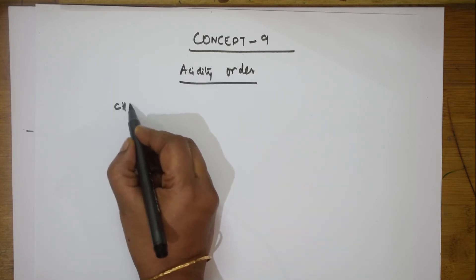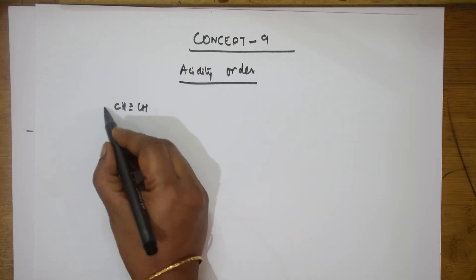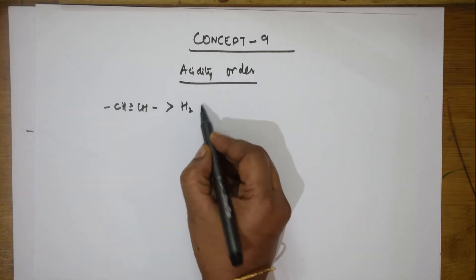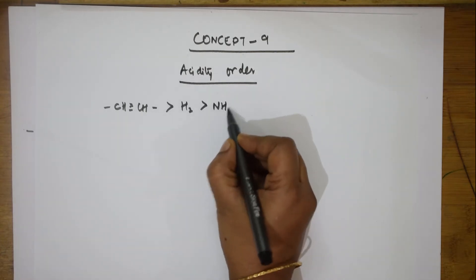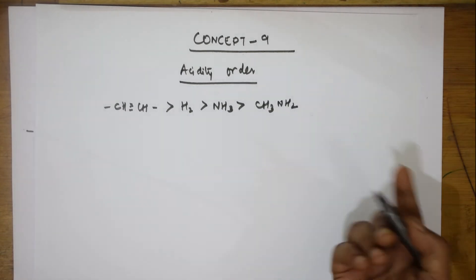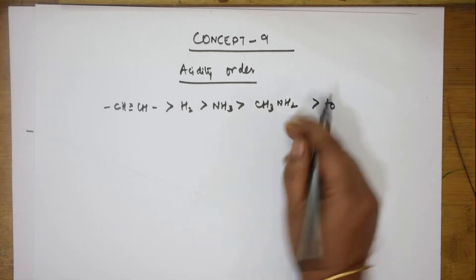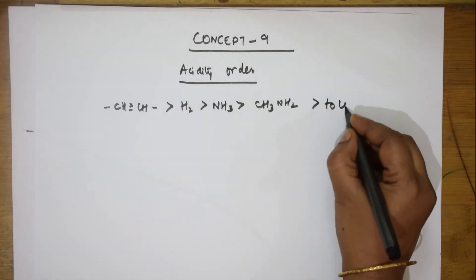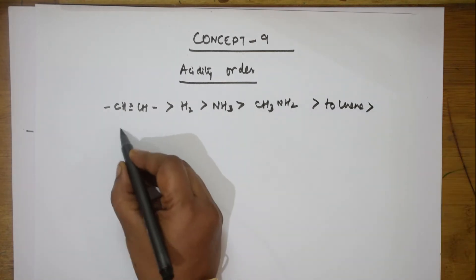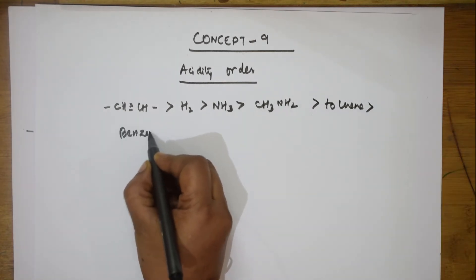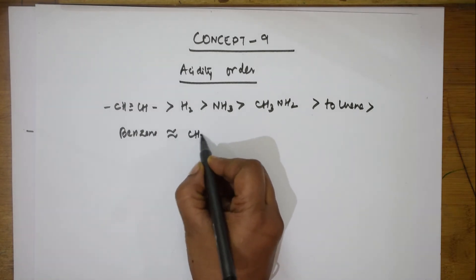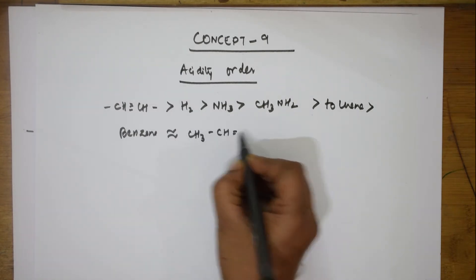The acidity order when you have both hydrocarbons and amines would be: the highest acidity is in alkynes, which is greater than hydrogen, which is greater than ammonia, which is greater than aliphatic amines. This is more acidic than toluene, and toluene has more acidity than benzene. Benzene has approximately equal acidity to alkenes.